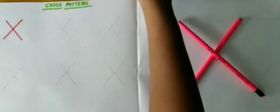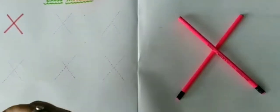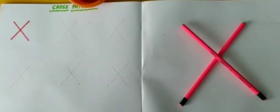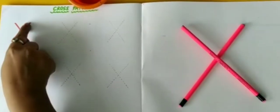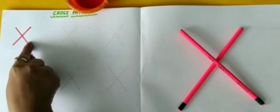I have taken red color to trace this pattern. How we will trace the cross pattern? One slanting line and then opposite slanting line.